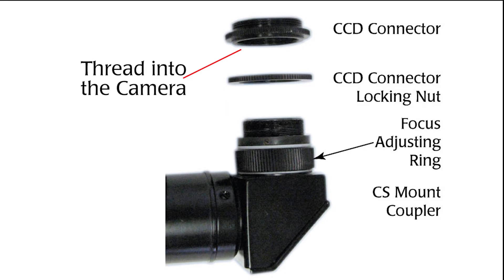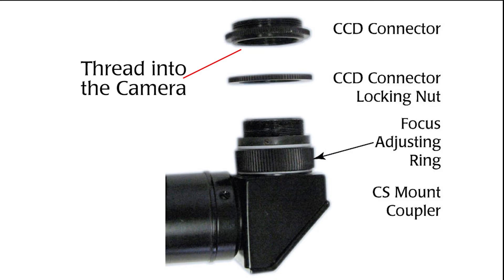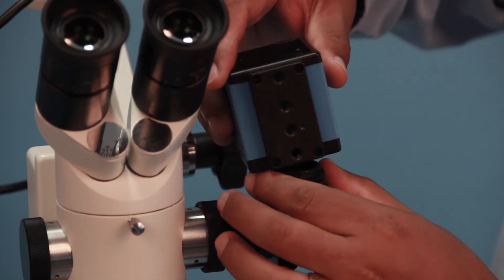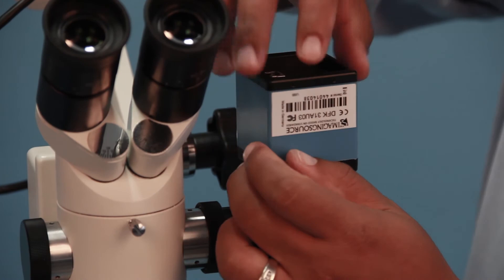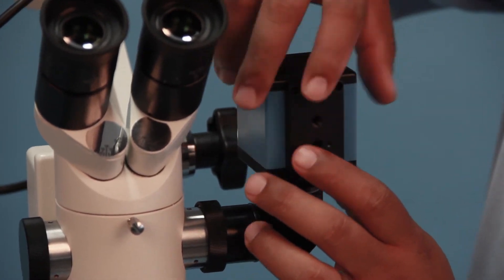Thread the male threads on the CCD connector onto the camera all the way until the CCD connector is butted against the camera. Do not over tighten these connections or they may become difficult to remove.